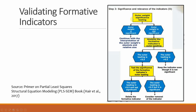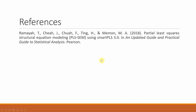Here is the decision chart. If your outer weight is significant, continue the analysis. If the outer weight is insignificant, check the outer loading. If the outer loading is less than 0.5 and not significant, delete the formative indicator. If the outer loading is greater than 0.5, keep the indicator even though the outer weight is not significant.